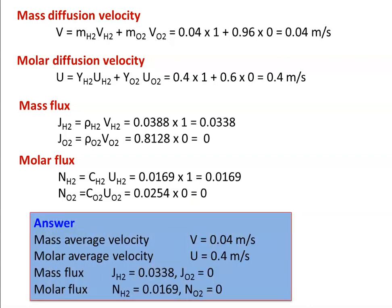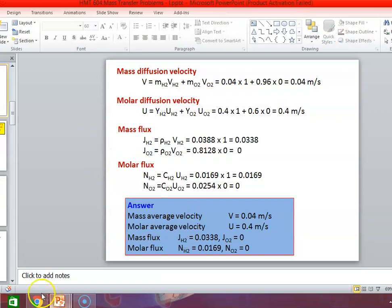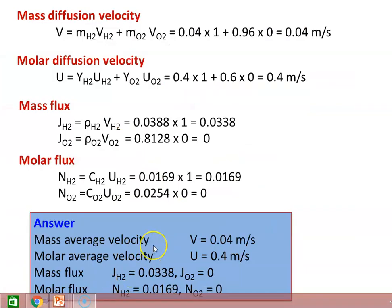The answers for Example 1: Mass average velocity = 0.04 m/s. Molar average velocity = 0.4 m/s. Mass flux of hydrogen = 0.0338, oxygen = 0. Molar flux of hydrogen = 0.0169, oxygen = 0.